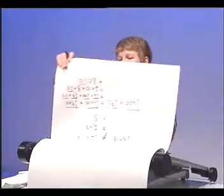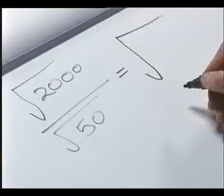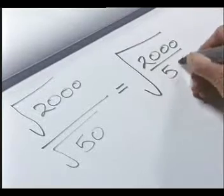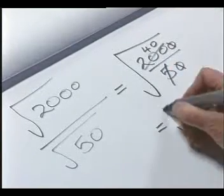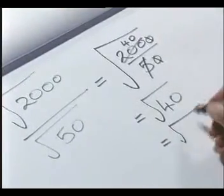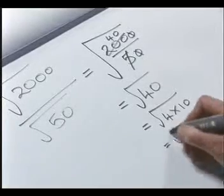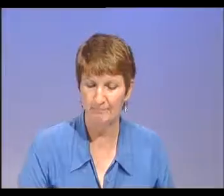What if we had a quotient involving square roots? What if we had the square root of 2000 divided by the square root of 50? We use a similar rule to the one for multiplication: we can say that is equal to the square root of 2000 divided by 50. We cancel down and get the square root of 40. But we can simplify the square root of 40: thinking of square numbers, break down 40 as 4 times 10, and that equals the square root of 4 times the square root of 10, which is 2 times the square root of 10.